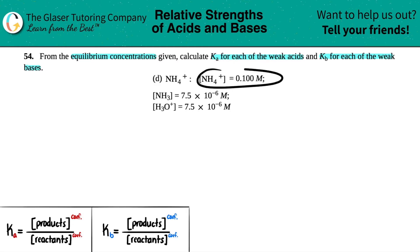They tell us that at equilibrium we have a 0.100 molarity solution of NH4+, an NH3 concentration of 7.5×10^-6 molarity, and the same for H3O+: 7.5×10^-6 molarity.